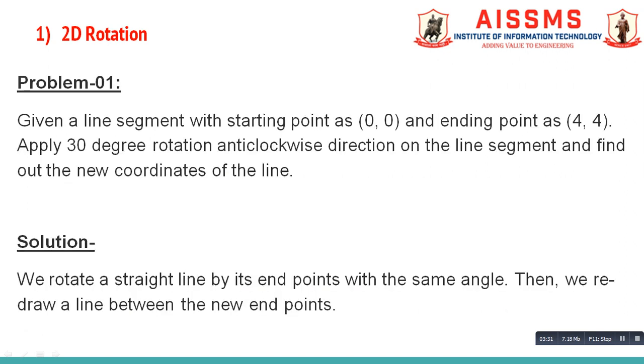Now let us see one problem based on 2D rotation. Our problem statement is: given a line segment with starting point as (0,0) and ending point as (4,4), apply 30 degree rotation anti-clockwise direction on the line segment and find the new coordinates of the line. Here starting point and ending point of line segment are given to us. Also they have given us rotation angle.